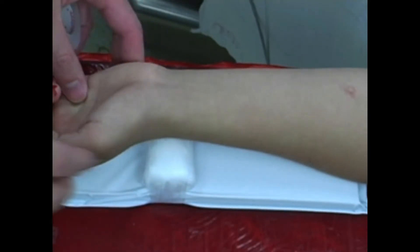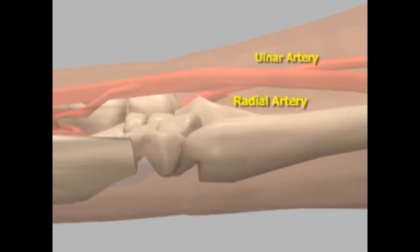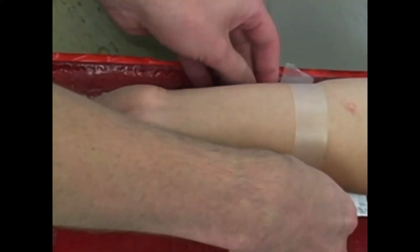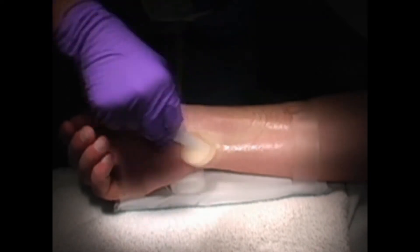Prior to sterile field preparation, position the wrist. By positioning the wrist in dorsiflexion, the radial artery is brought in closer approximation to the skin, which can be instrumental to the success of the procedure. Proper positioning can be maintained by placing a roll of gauze under the wrist or by using a specially designed arm board and securing the arm with tape. Once positioned, the field can be sterilely prepared and draped using towels or a drape.